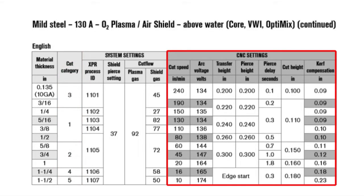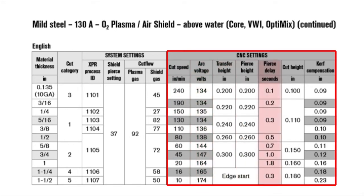CNC settings contain parameter settings used by the CNC and THC to control the cutting process. Settings include cut speed, arc voltage, transfer height, pierce height, pierce delay, cut height, and curve compensation.